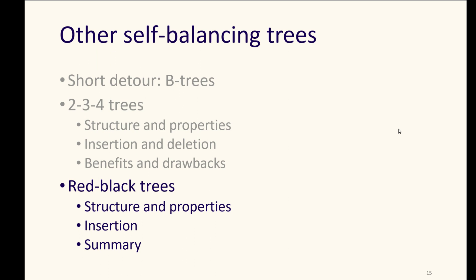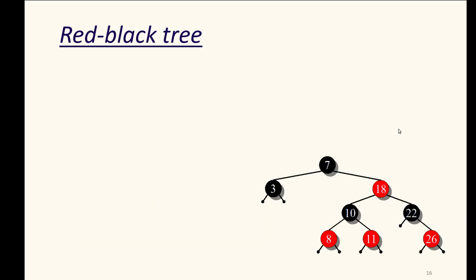Except we're going to create them in a way that gives us some of the properties that we got from two, three, four trees, the good ones, and ignores or avoids some of the bad ones, and the way we'll do that is with a red-black tree.